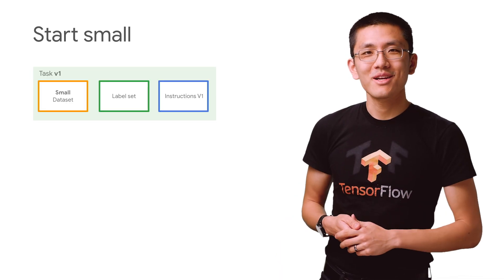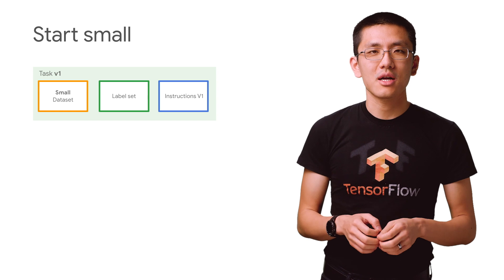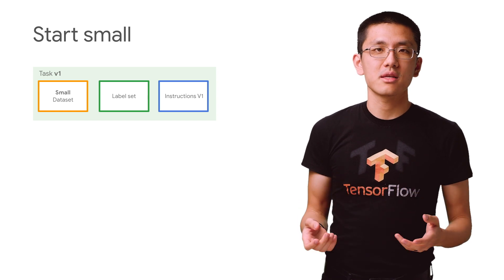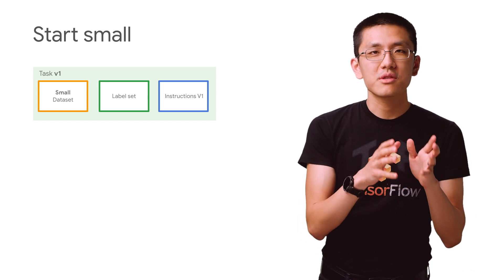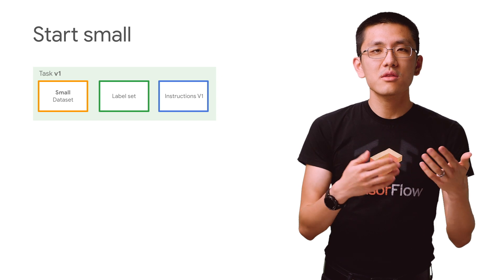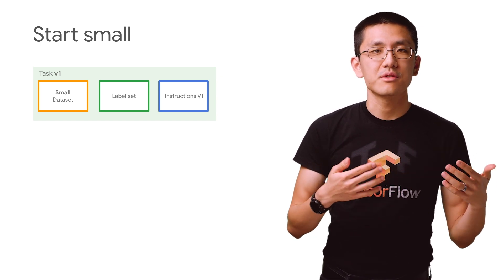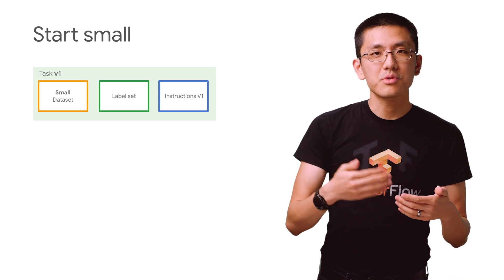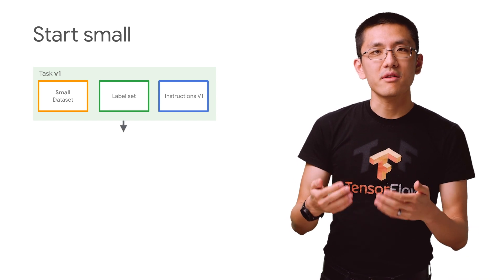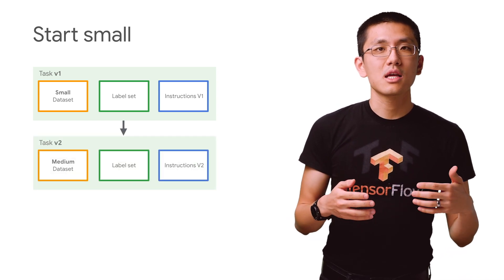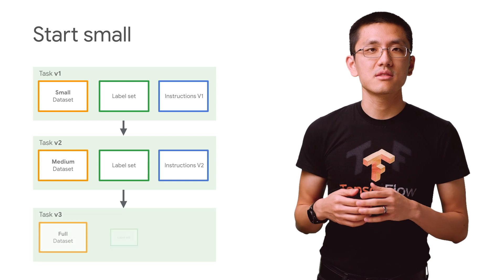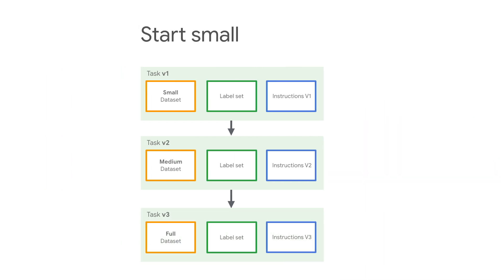One final tip: ramp up your data labeling jobs incrementally. Start your first labeling job with a small amount of data, then see whether the results are what you expect. You can then revise your instructions and create subsequent jobs, iterating until you feel comfortable sending larger and larger quantities of data to be labeled. This will help you get high-quality results and make the best use of your budget both in terms of time and money.